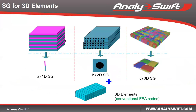To use SWIFT-CON, we need to first decide the structure genome, which is defined as the smallest mathematical building block of the structure. If we are using 3D elements, we can choose 1D, 2D, or 3D structure genomes.